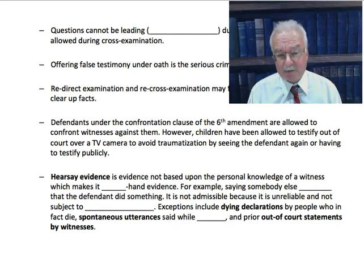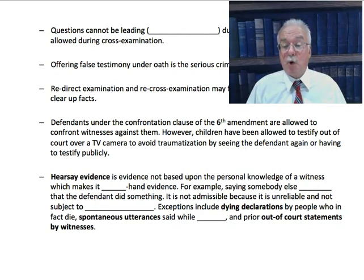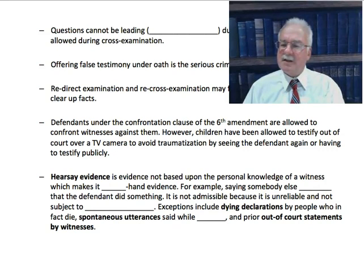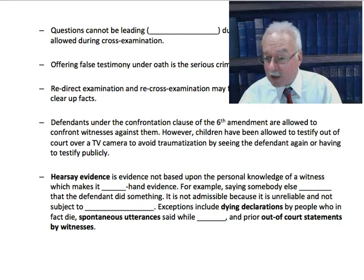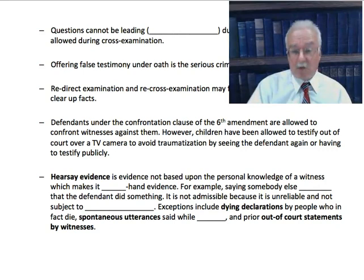Offering false testimony under oath is the serious crime of perjury. Redirect examination and recross examination may follow until no longer needed to clear up facts. If cross-examination reveals problems, the attorney who called the witness can do a redirect to clear them up, and then the other lawyer can do a recross to question the redirect.